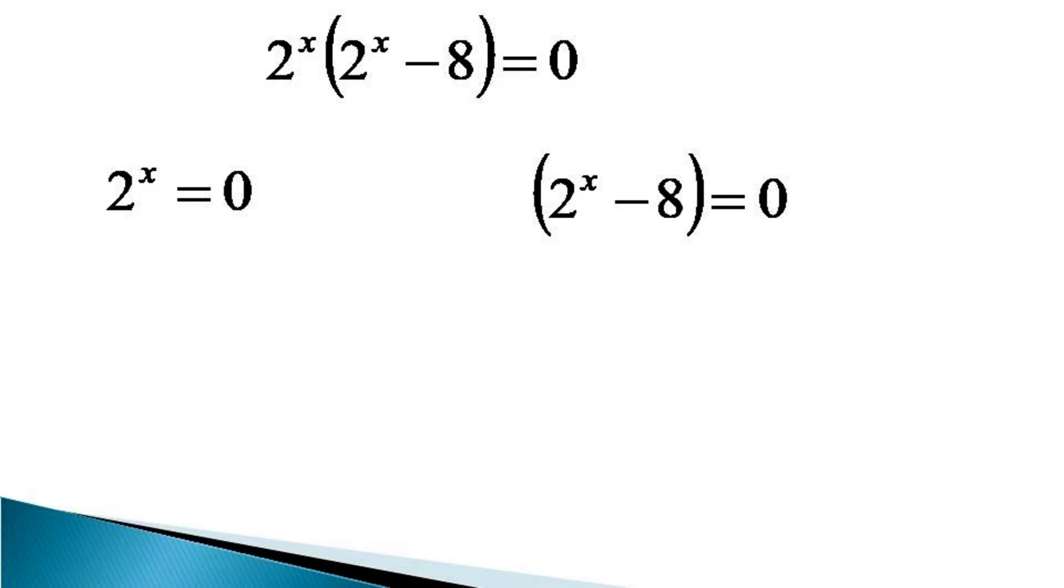So this solution is discarded and we consider 2^x - 8 = 0. This can be written as 2^x - 2^3 = 0 or 2^x = 2^3. And since both the bases are equal, the indices also must be equal